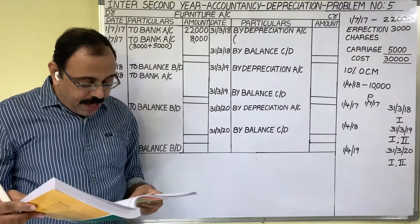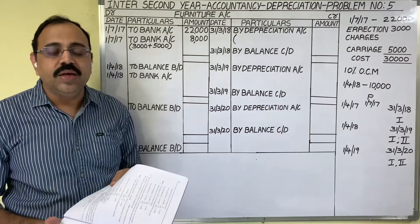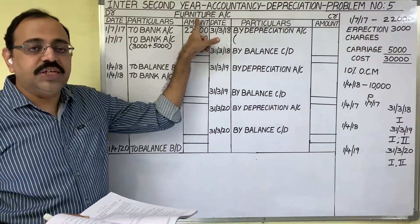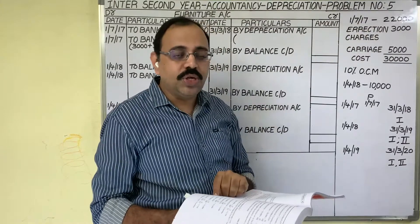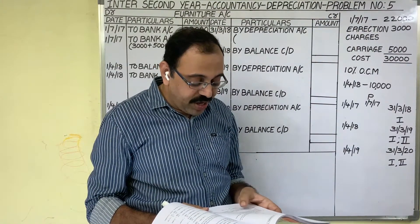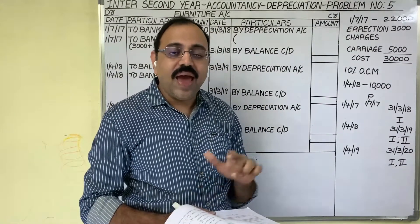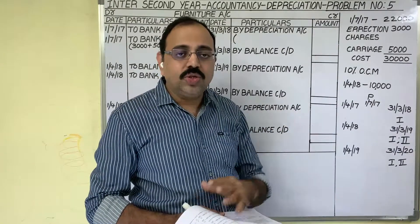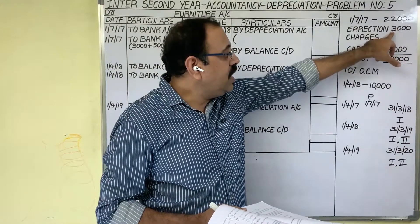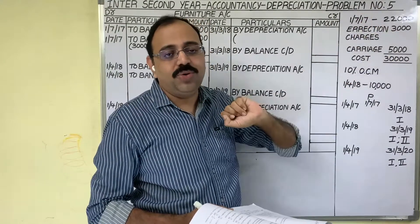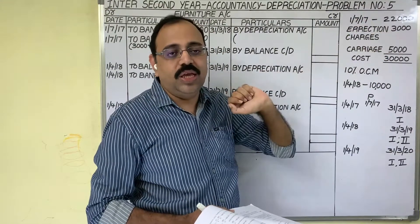Ramana and Brothers purchased furniture for 22,000 rupees on 1st July 2017. The fixed asset name is furniture. They bought it on 1st July 2017 for 22,000 rupees. Erection charges paid were 3,000 rupees and carriage paid was 5,000 rupees. Erection charges are also known as installation charges; carriage means transportation cost — to bring the asset from the purchasing place to our factory.